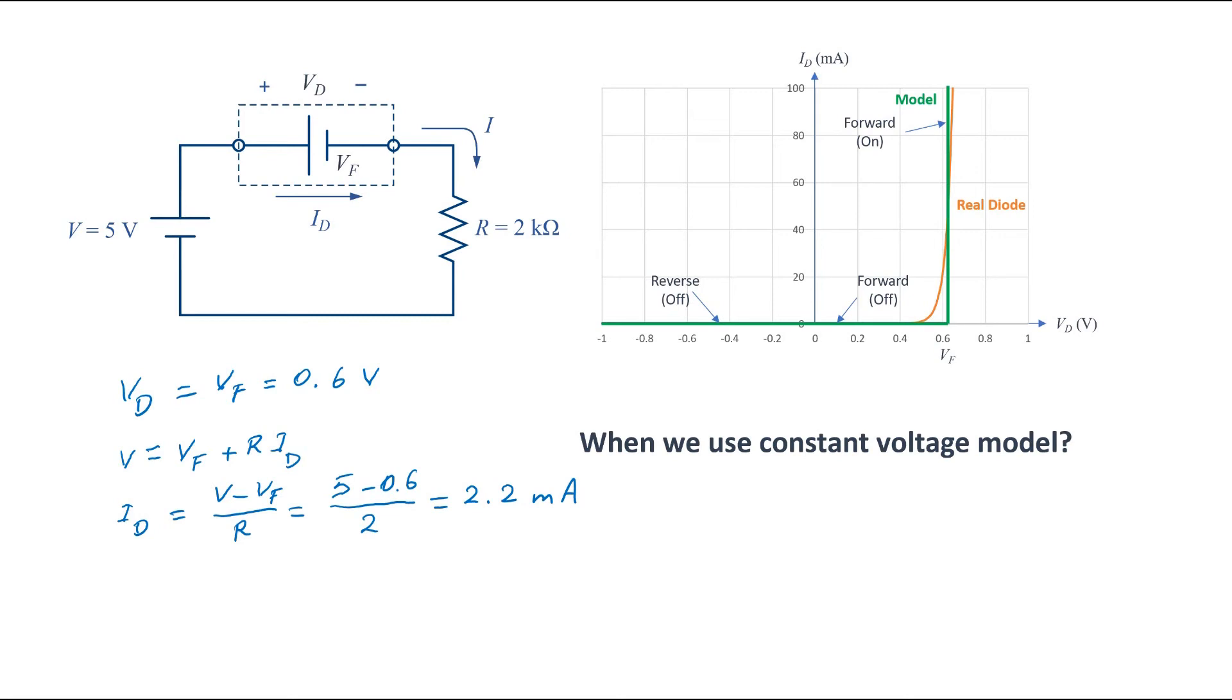When we use the constant voltage model, most of the time, nearly always, it is fairly accurate except at small currents close to the knee.